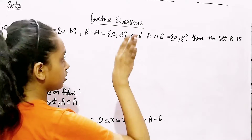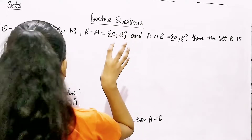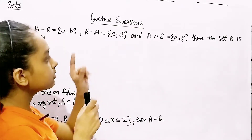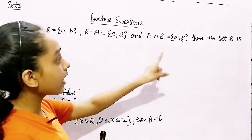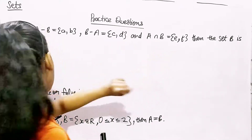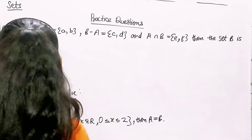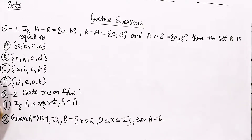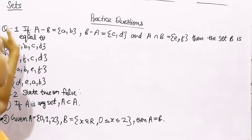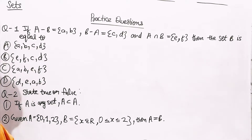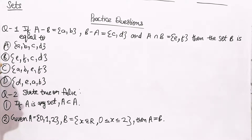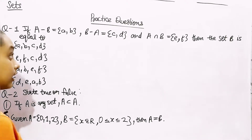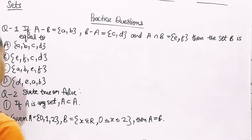...what do we have to find? We have to find set A — wait, sorry — we have to find set B. These are the four options given to us and we have to solve it through these options.